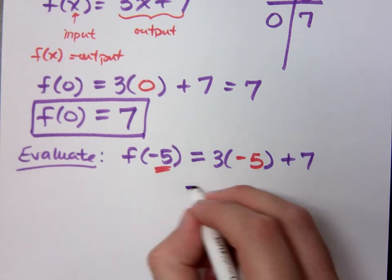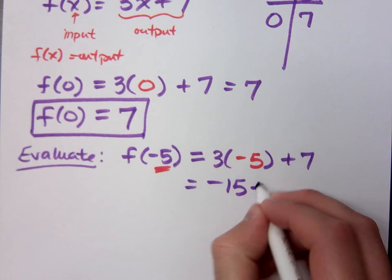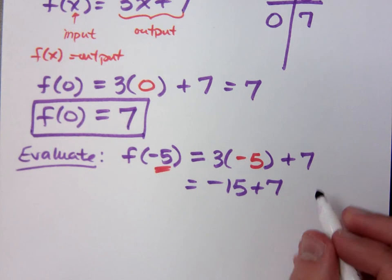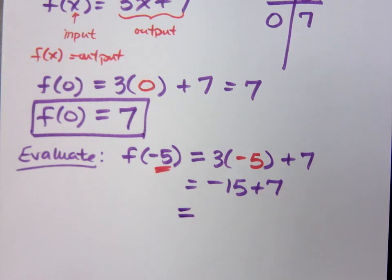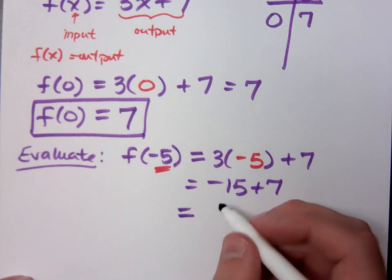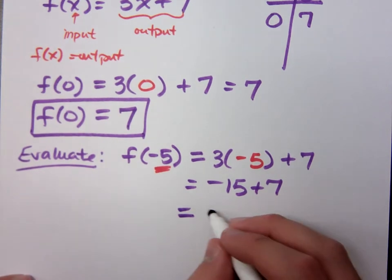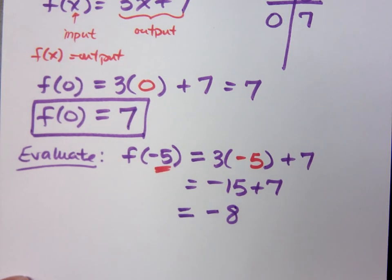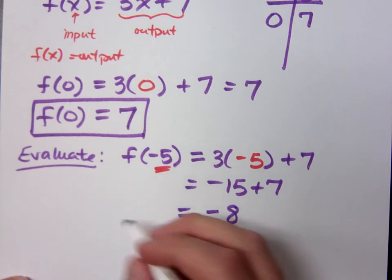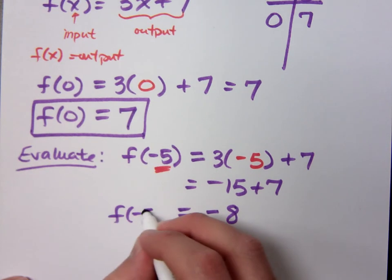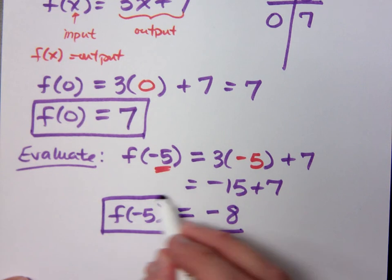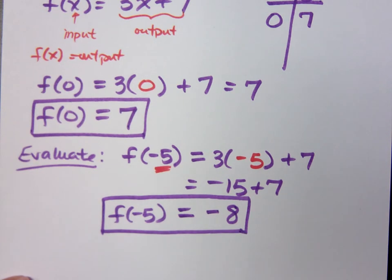So you just work this out. Negative 15 plus 7, you better not be going to your calculator to type that in. It's negative 8. So this says that when I take my function f and I evaluate that when x equals negative 5, I get negative 8.